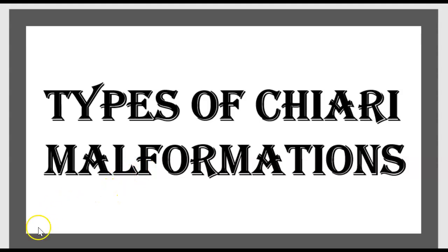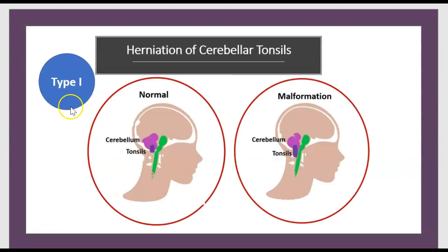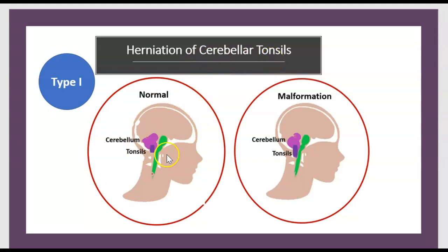There are four types of Chiari malformation. Type 1 is herniation of the cerebellar tonsils. Here is a normal cerebellum, and here is the herniation of the tonsil.